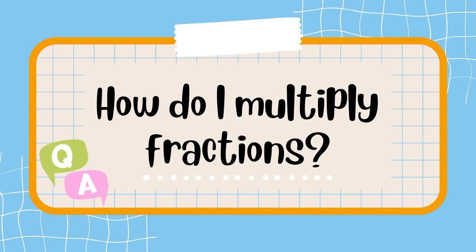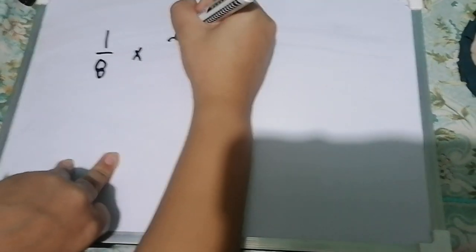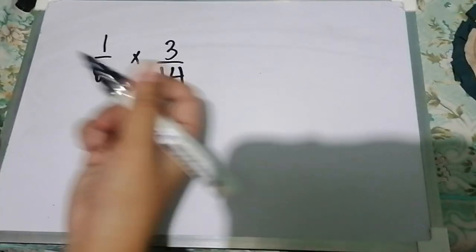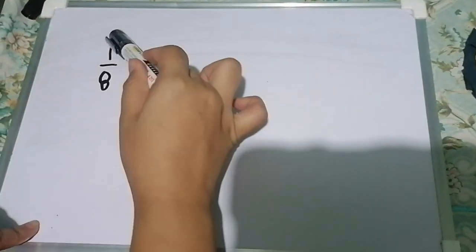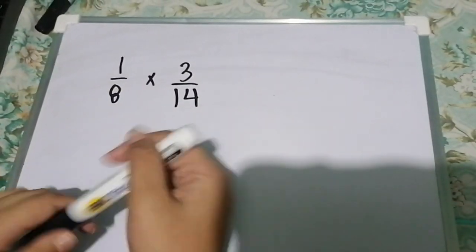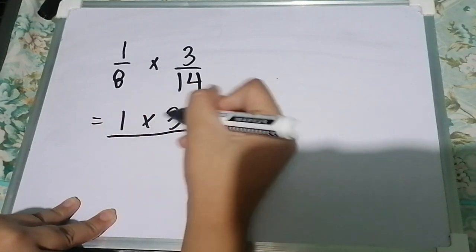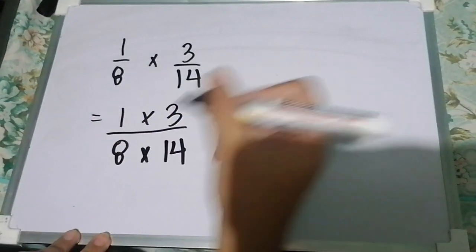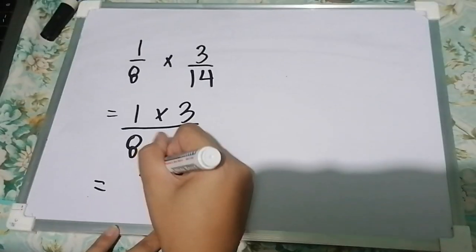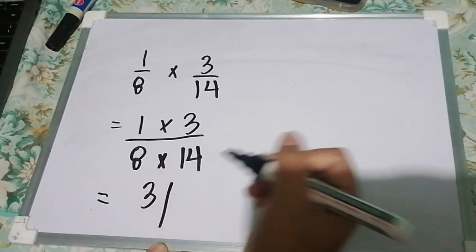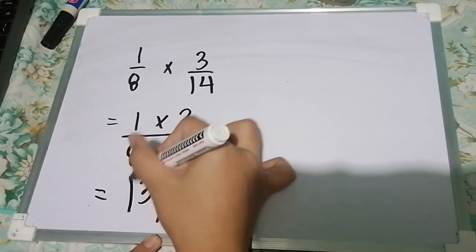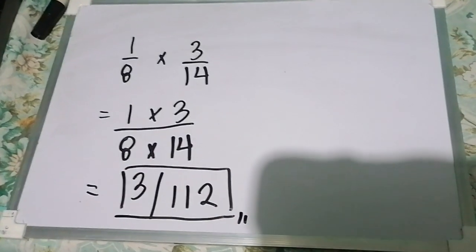Now, you may ask, how do I multiply fractions? Well, I will explain it for you. What is 1/8 multiplied by 3/14? In the easiest explanation, you only must multiply numerator to numerator and denominator to denominator, regardless of whether it is a proper or improper fraction. So, 1 times 3 over 8 times 14. In this example, we multiply 1 by 3, so the product is 3. Now, we multiply 8 by 14, and the product is 112. So our final answer is 3/112. Very simple, right?